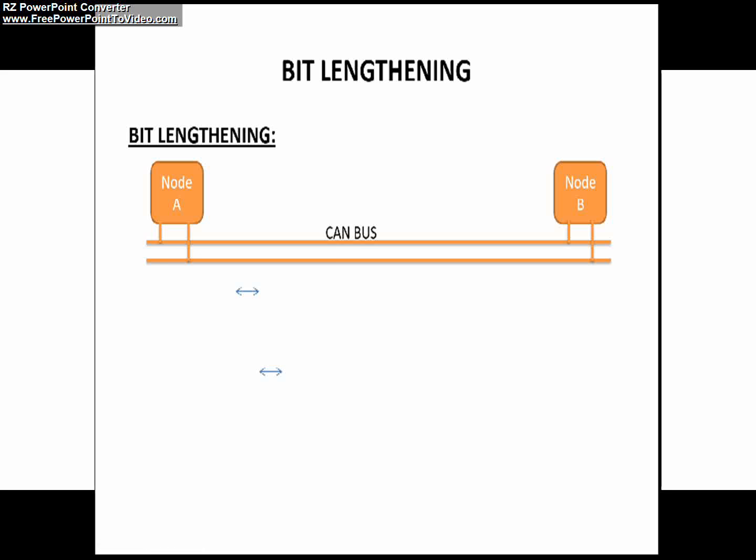In this example, I am going to consider the transmitter is transmitting its bit one time quanta slower than the receiver, I mean node B.